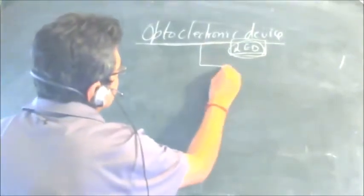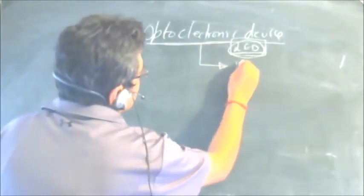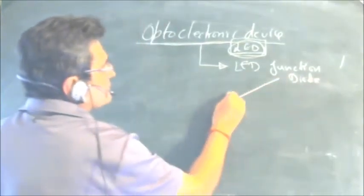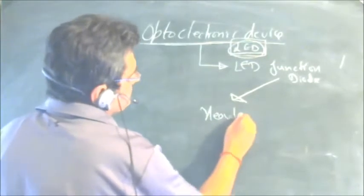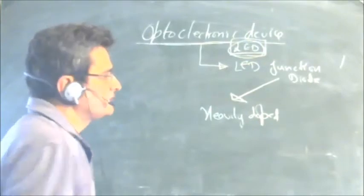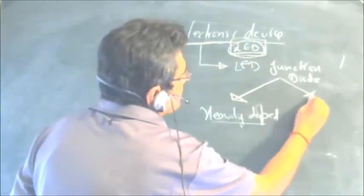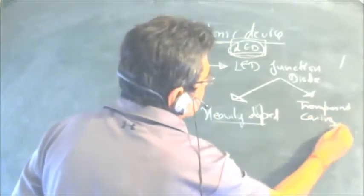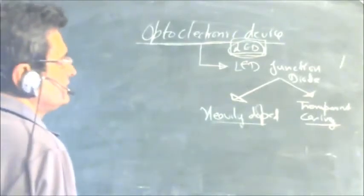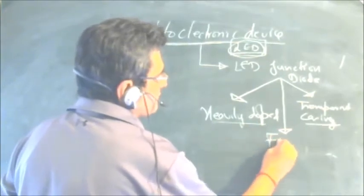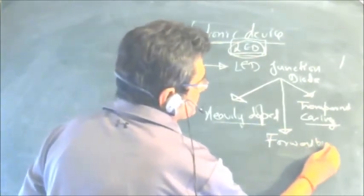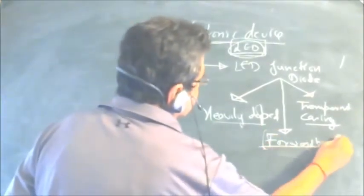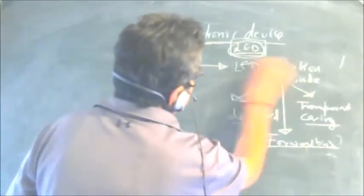LED is a junction diode like any other diode, but there are certain specific requirements. One is that it is heavily doped — the concentration of majority carriers is relatively higher. It also has a transparent casing so that emitted photons can come out. Unlike the photo diode, which is operated in reverse bias, the LED is operated in forward bias.